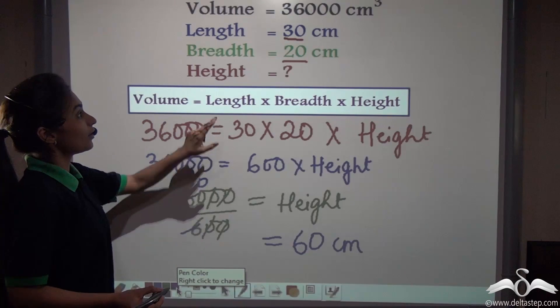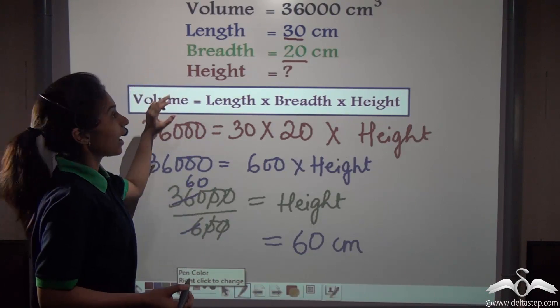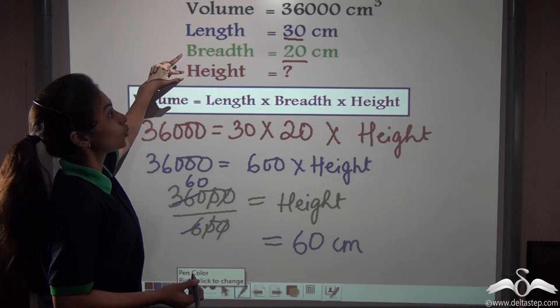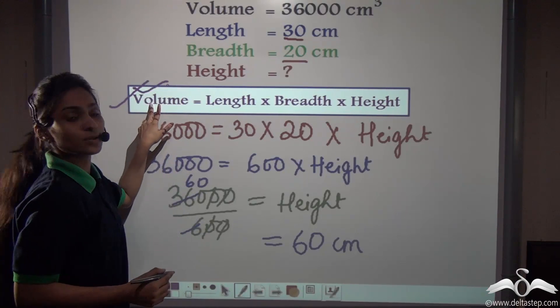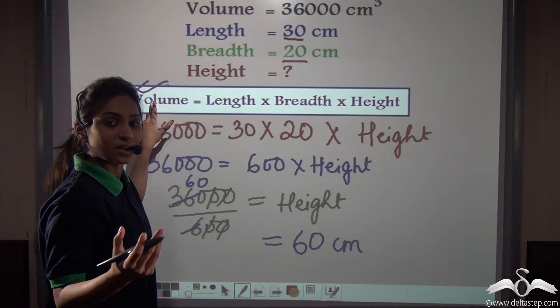Well not only the height, if any of these was missing and you have the other two values, you can find the missing value using the formula volume is equal to length into breadth into height.